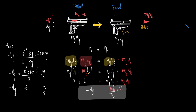We have the gun component and the bullet component on both sides. Initially, the gun is at rest, so the initial velocity of the gun Ug = 0, and the initial velocity of the bullet Ub = 0 as well. Since both initial velocities are zero, the entire initial momentum term is zero.